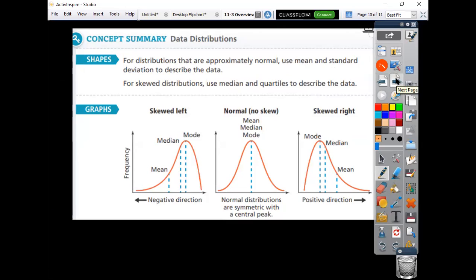And we've already mentioned these as well. So this is your summary for distributions that are approximately normal. Use the mean and the standard deviation. If you have something skewed, use your median and your quartiles to describe the data. And that wraps up this lesson.